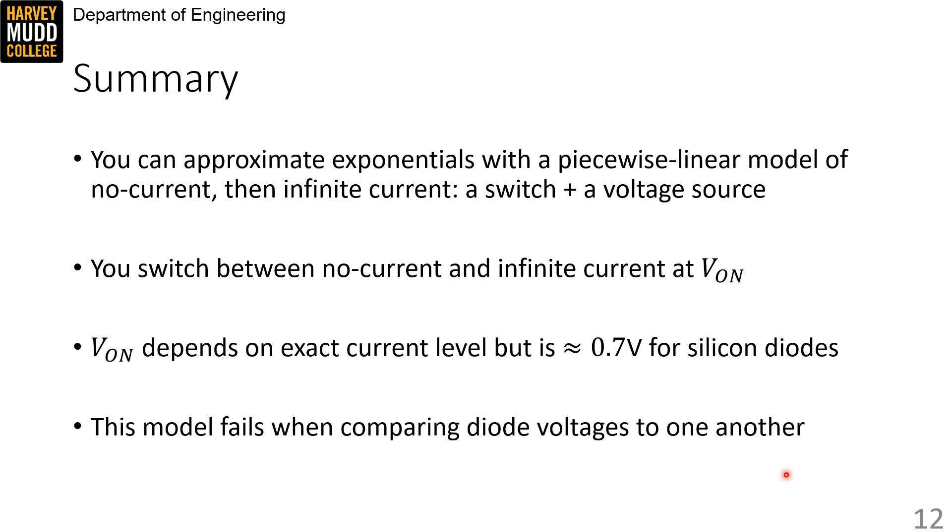VON depends on the exact current level, but it's about 0.7 volts for silicon diodes. And this model fails when you're comparing diode voltages to one another.